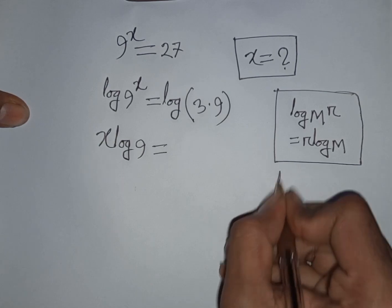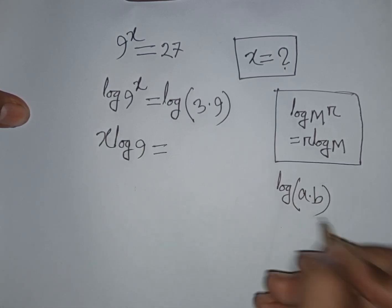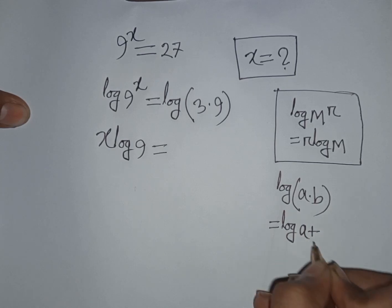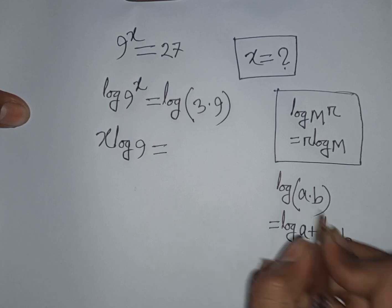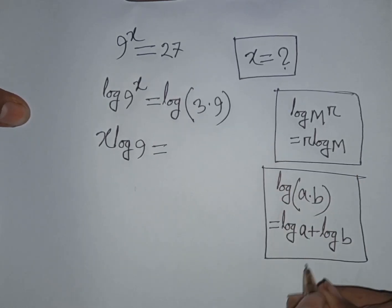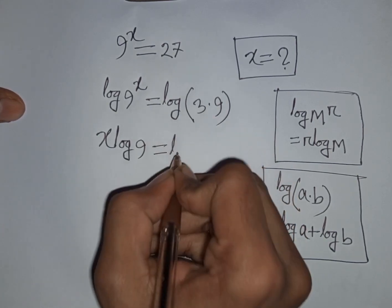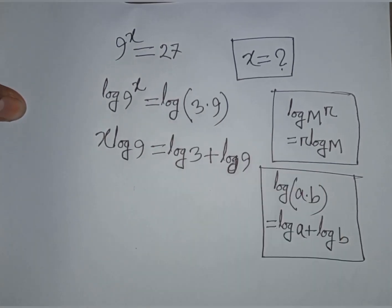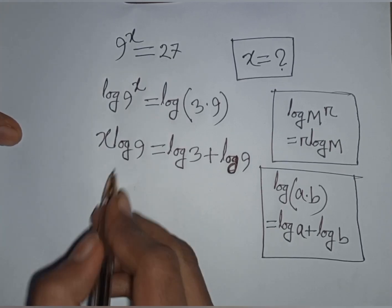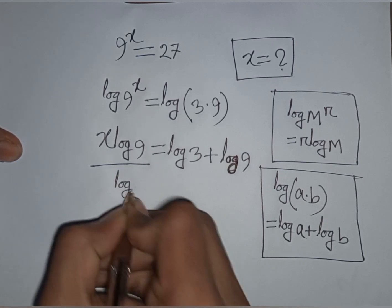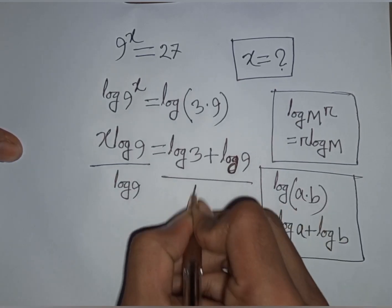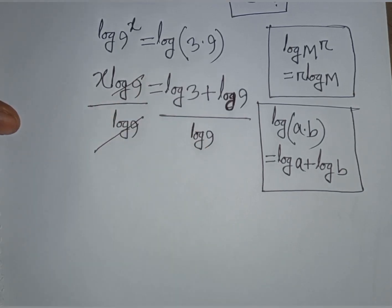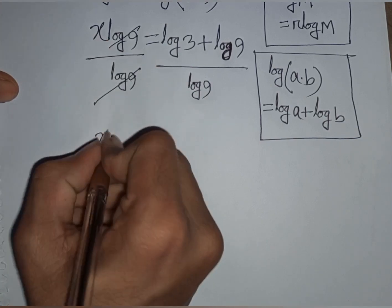Now apply the formula: log of a times b is equal to log a plus log b. According to this formula, log of 3 times 9 becomes log 3 plus log 9. We need the value of x, so divide both sides by log 9. This log 9 and that log 9 will cancel.